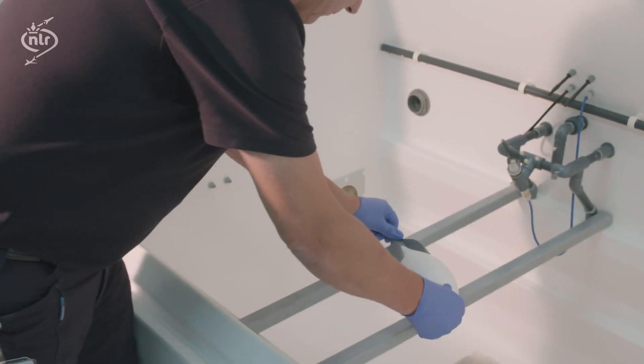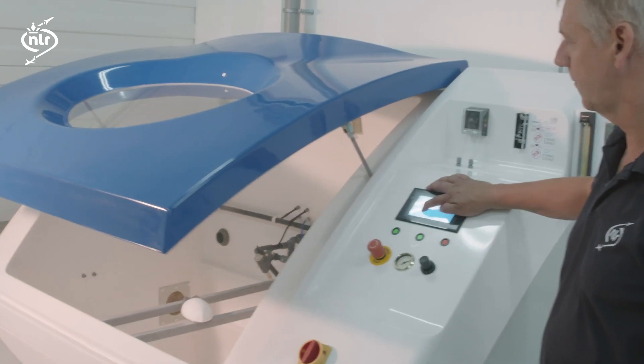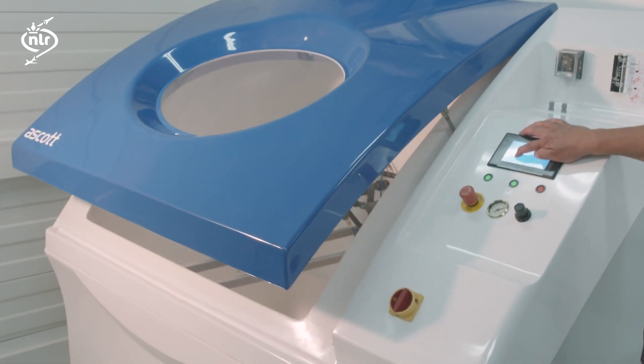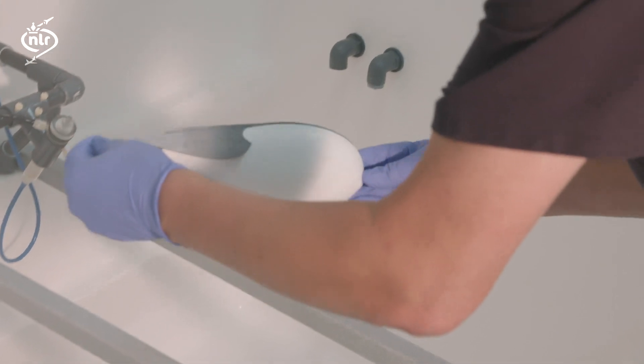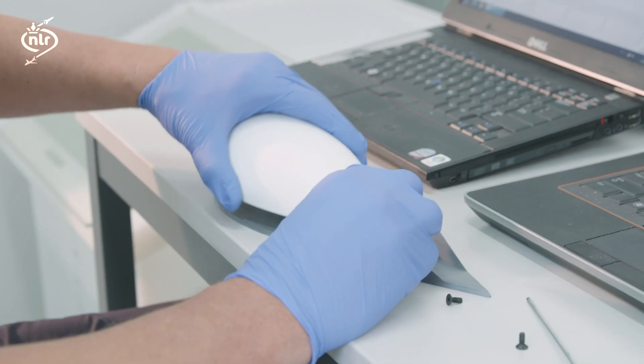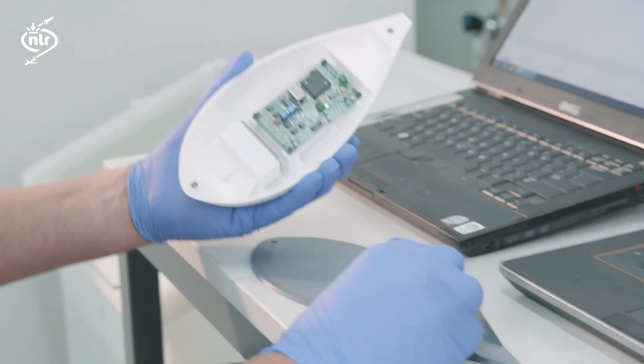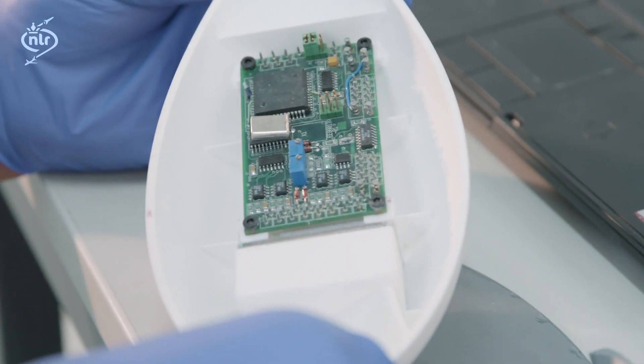A salt spray test can show how well a product can withstand extensive and prolonged exposure to seawater. Corrosion is a big enemy for all kinds of materials. NLR can perform virtually any environmental test to get a view on how a product withstands all kinds of environmental conditions.